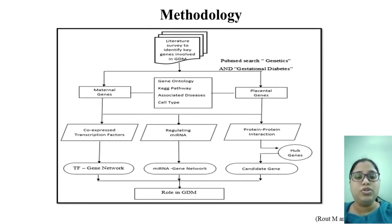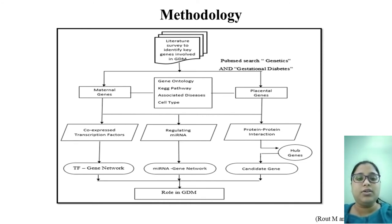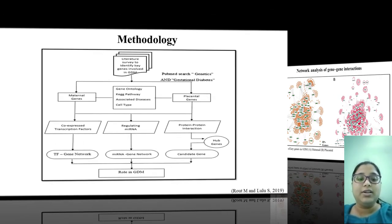The workflow proposed was to identify the genes involved in GDM through literature, then segregate them into maternal and placental groups, and thus understand their regulatory functions, co-morbidities, and cell types. Through a systems biology approach, we constructed a protein-protein interaction network, understood highly interconnected genes, and built a transcription factor regulatory network as well as a microRNA network to understand the regulation of these factors and their role in affecting these hub genes in GDM.